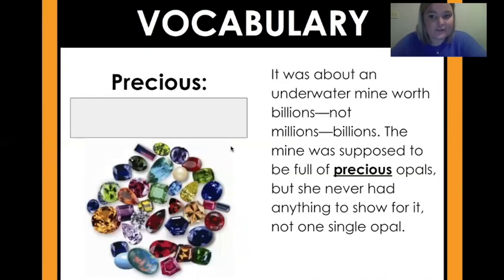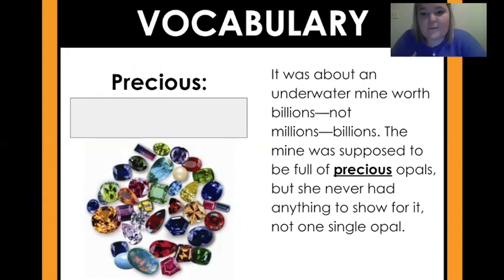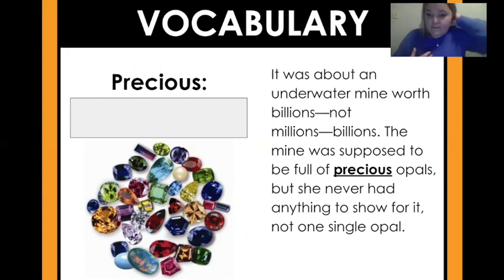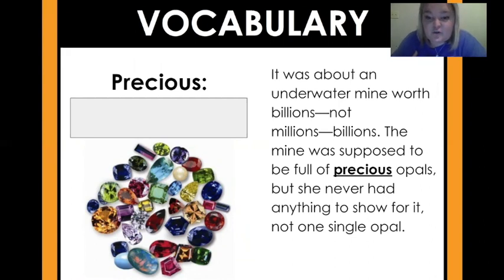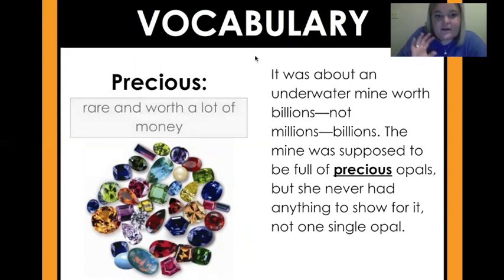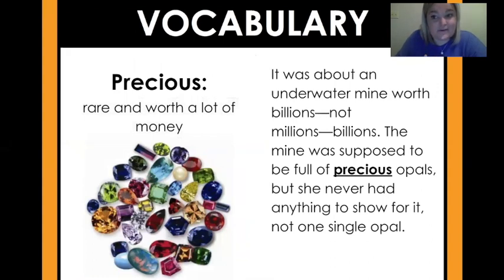The next vocabulary word is precious, and we got all those pretty jewels — kind of like with my opals. The sentence from the text is: 'It was about an underwater mine worth billions, not millions, billions. The mine was supposed to be full of precious opals, but she never had anything to show for it. Not one single opal.' Precious means rare and worth a lot of money. Is that what you guessed?